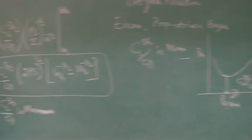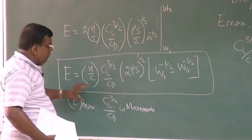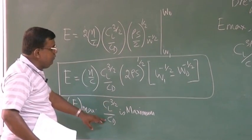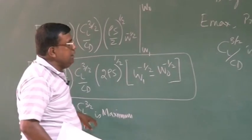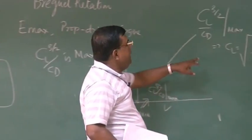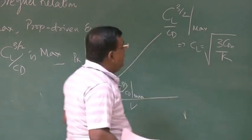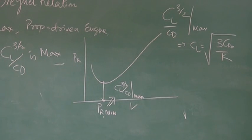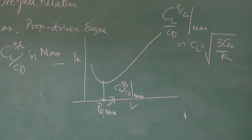Again, I come back here. If I want to have E max, I need to fly such that CL^(3/2) by CD is maximum. That in turn means I am flying at CL equal to 3CD₀ by K, and this is strictly for propeller driven IC engine aircraft.